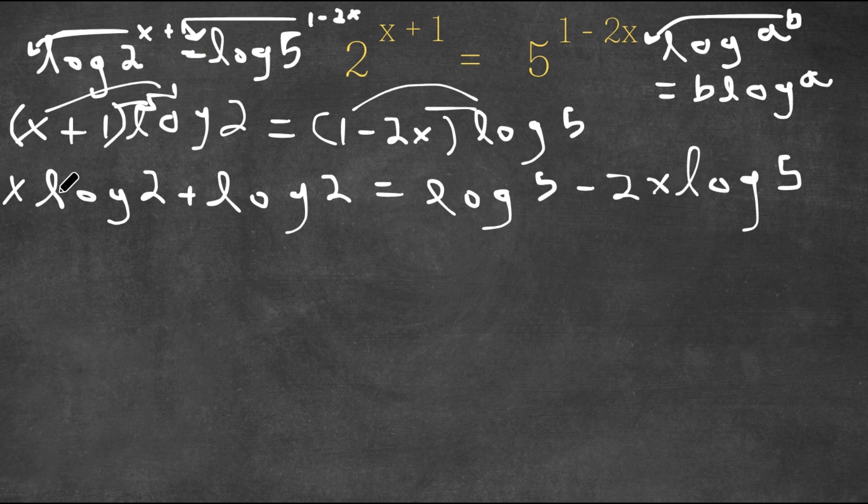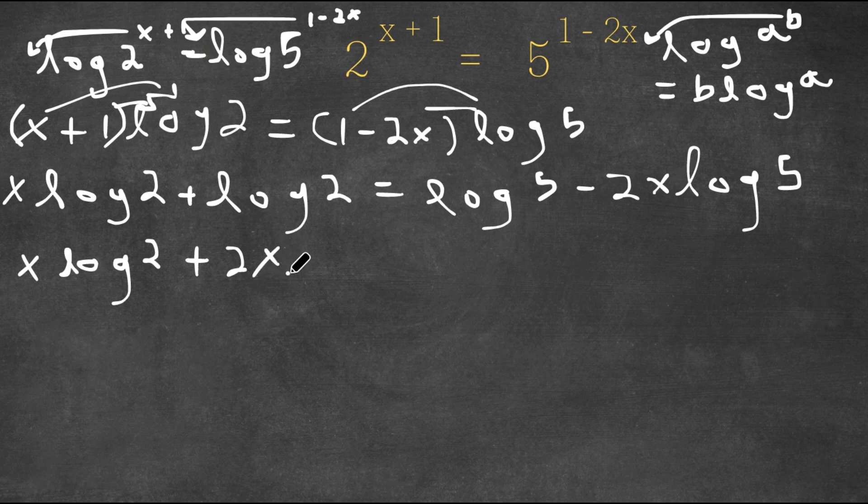Now I'm going to move all the x terms to our left-hand side and all the non-x terms to our right-hand side. So now this will get me to x times log 2 plus 2x times log 5.